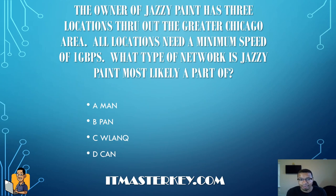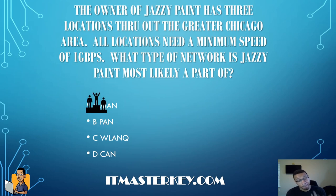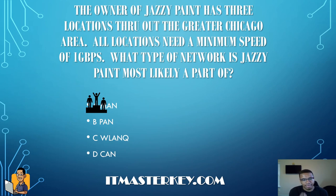The owner of Jazzy Paint has three locations throughout the greater Chicago area. All locations need a minimum speed of one gigabit per second. What type of network is Jazzy Paint most likely part of? The answer is a MAN — metropolitan area network. It brought up Chicago, which is a city, so that clues you in. Those small hints in the question help you get the answer. A PAN is a personal area network, a CAN is a campus area network, and it's not a wireless LAN.